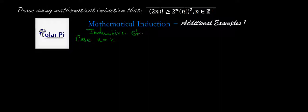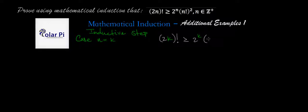In this important step, we assume the given statement to be true. We assume true the fact that two times k factorial is greater or equal to two to the power of k times k factorial squared. Notice this is basically the same as the original statement, except instead of n we have k — because n equals k in this step. We make use of this inductive step in the next and final step.